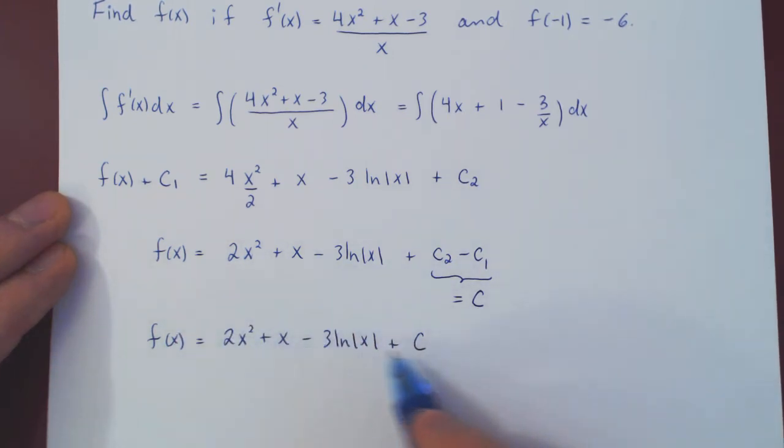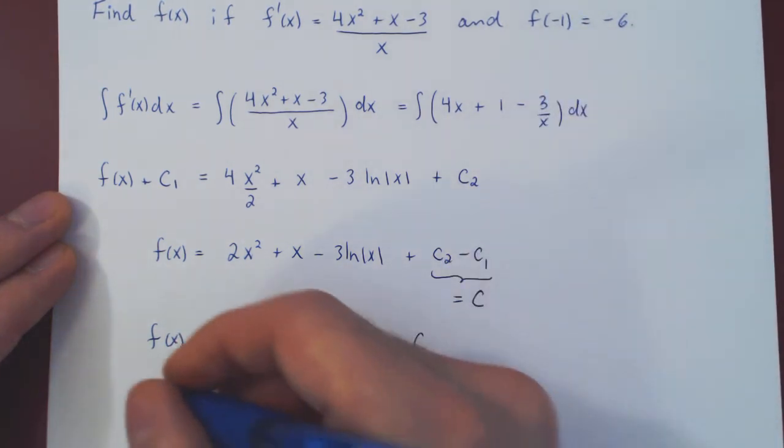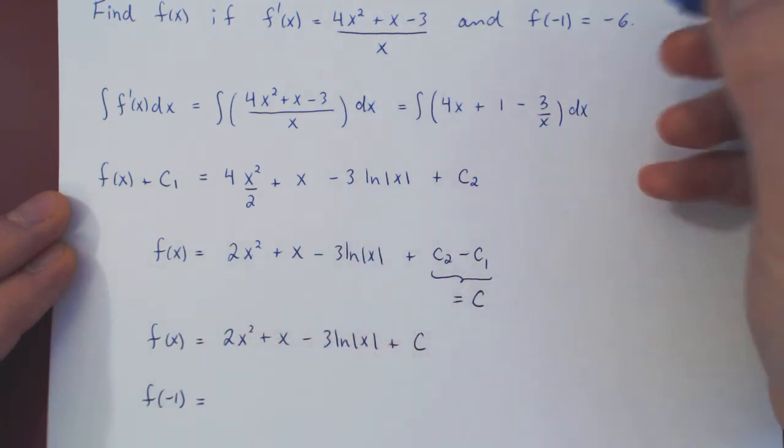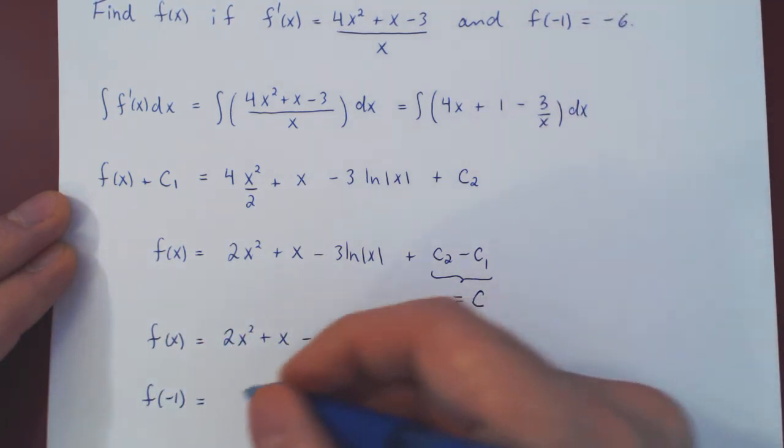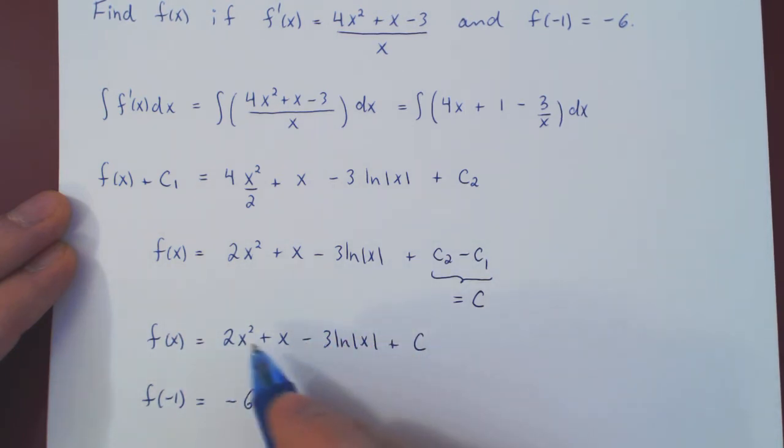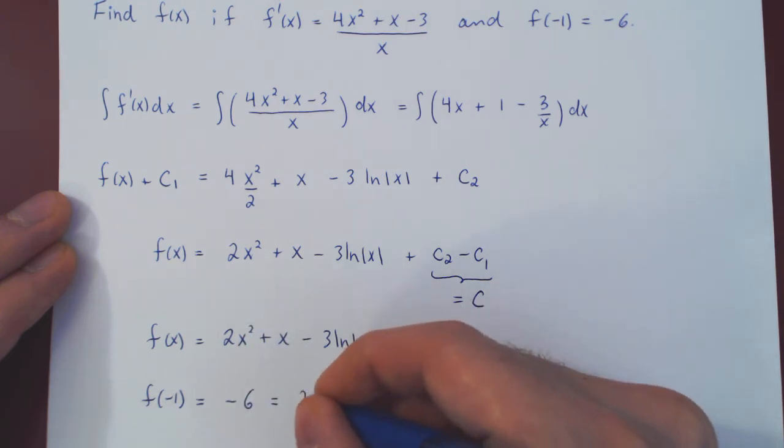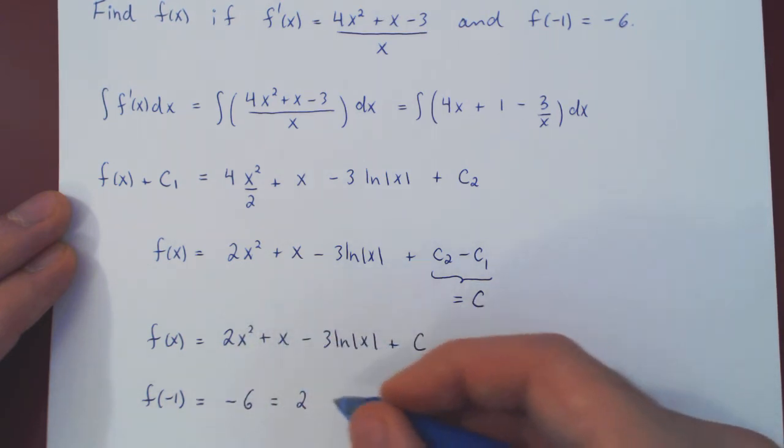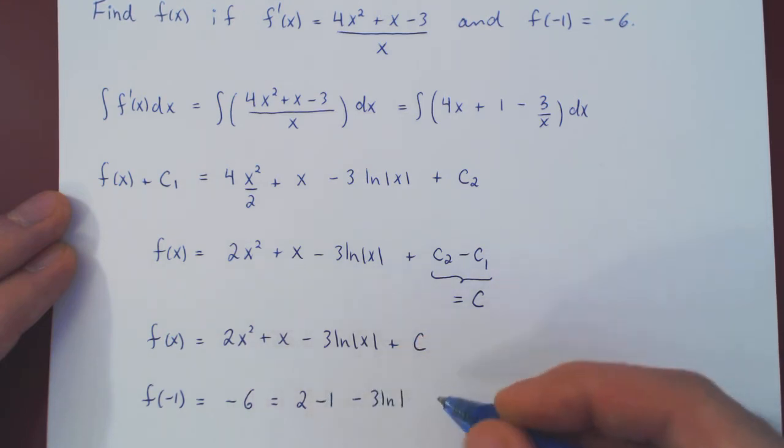So, we replace x by -1. So we have f(-1), which we know by assumption to be -6. And now let's replace x by -1. So we'll get 2 times (-1)², that's 1 times 2, which is 2, plus -1, so minus 1, minus 3, the ln of |-1|, plus c.